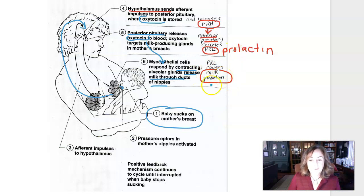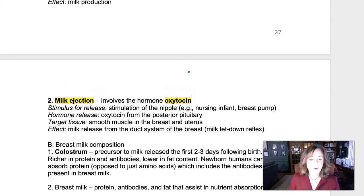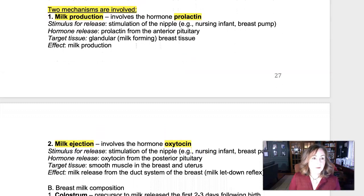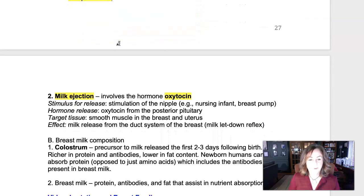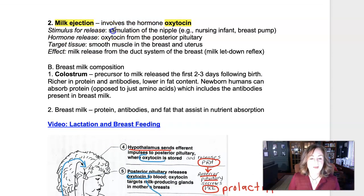Oxytocin ejects the milk from the breast, and prolactin causes milk to build back up — causing more milk production. So as long as there's mechanical stimulation of the nipple, whether from the nursing offspring or a pump, there will be milk production. Once this mechanical stimulation stops, milk production will also start to stop. The stimulus for prolactin is stimulation of the nipple, targeting the breast to cause milk production. Oxytocin, also released due to stimulation of the mother's nipple, comes from the posterior pituitary and causes milk ejection — the milk letdown reflex — by targeting smooth muscle.